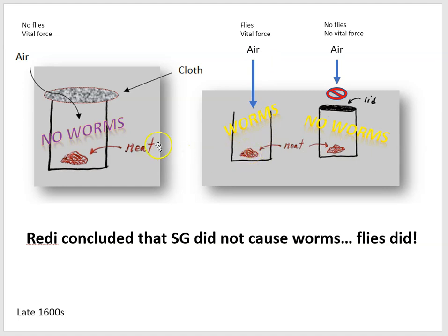The cleverness of Redi was to set up another condition where he was able to block the flies with a cloth, but that cloth would allow air into the jar. If there really was a vital force, we should find worms in this condition — but he always found no worms. So Redi takes this as evidence that there is no spontaneous generation of meat into worms; rather, worms are coming from flies landing on the meat and laying eggs.